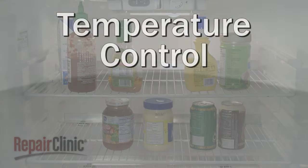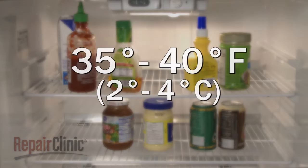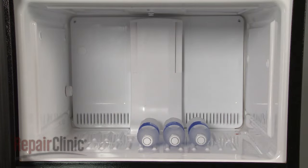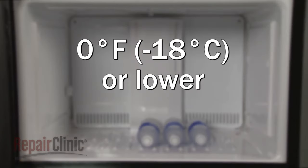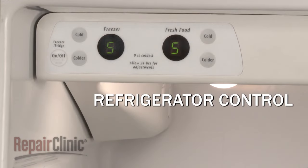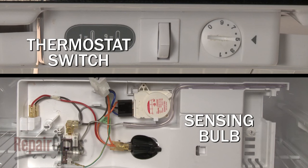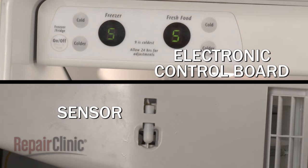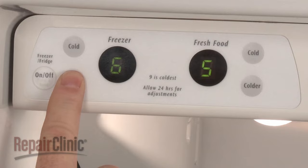The temperature within the refrigerator should be between 35 and 40 degrees Fahrenheit. The temperature in the freezer should be 0 degrees Fahrenheit or lower. The temperature is regulated by the refrigerator control. Depending on the model, the control may be a thermostat switch and sensing bulb assembly, or an electronic control board that works with one or more sensors. Be aware that some models will have a separate control for the freezer.